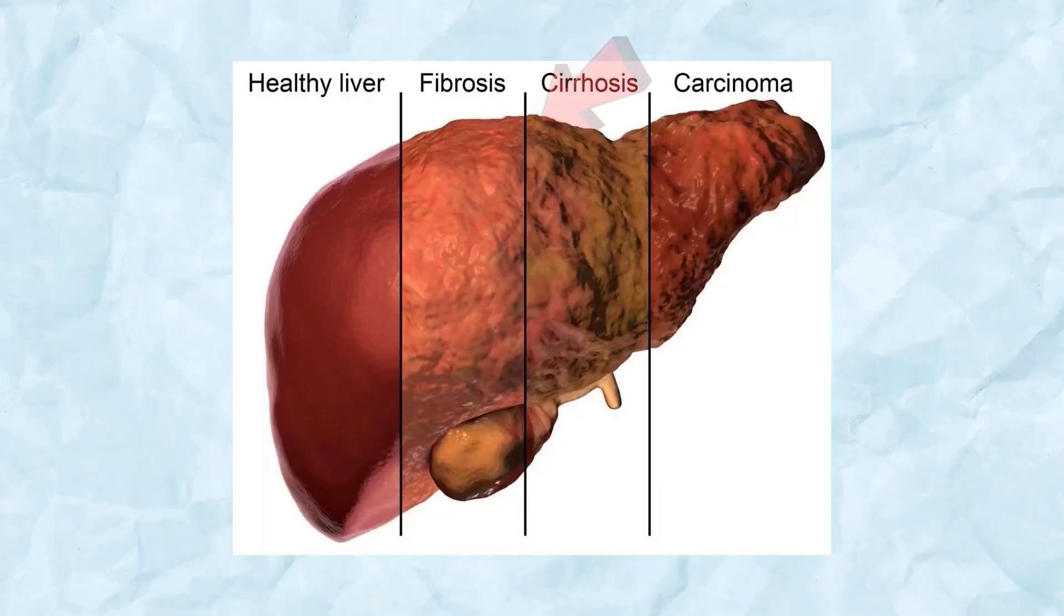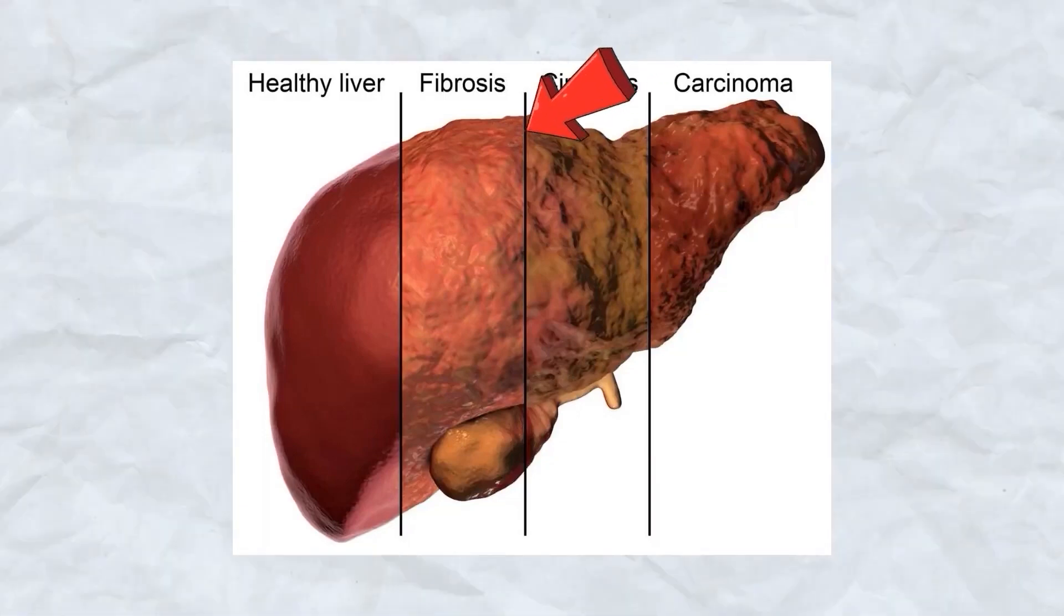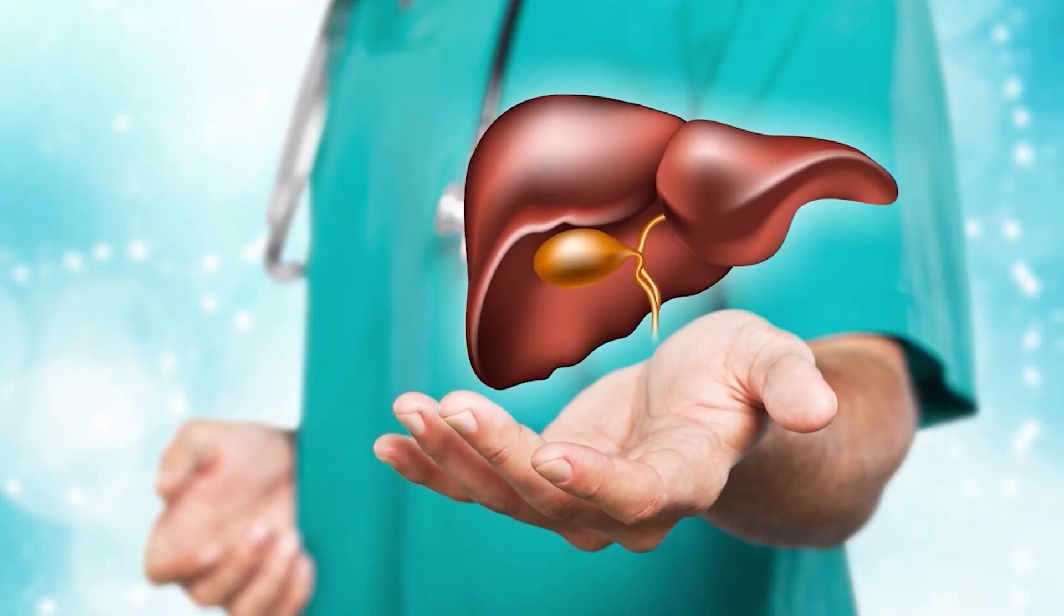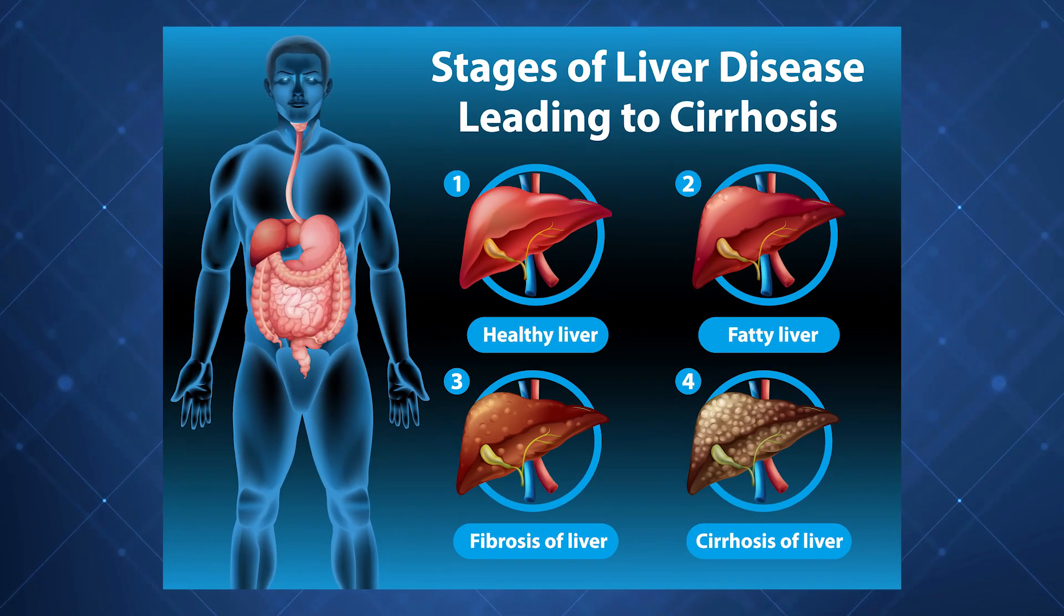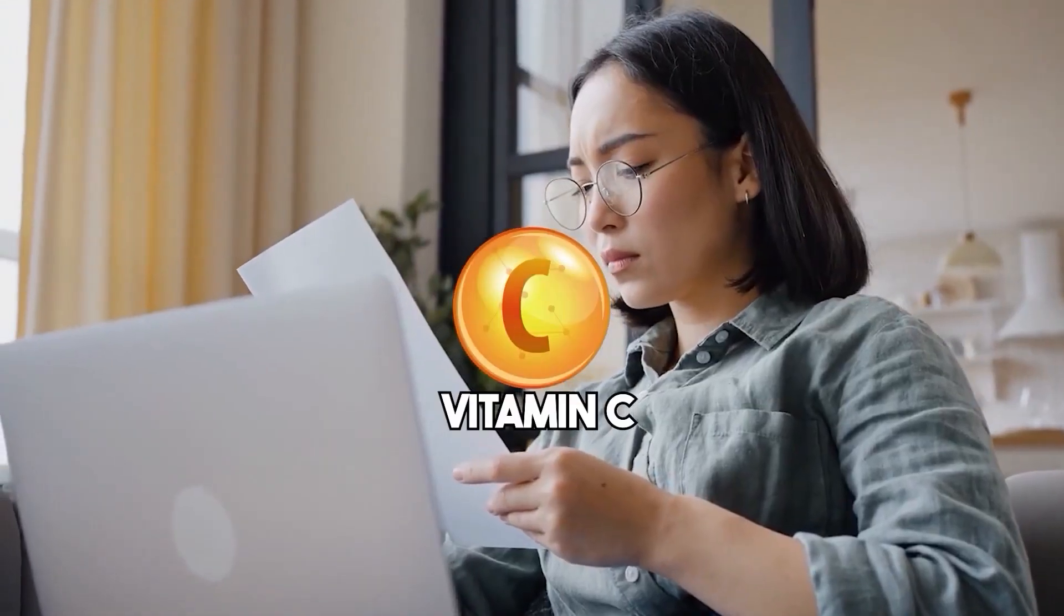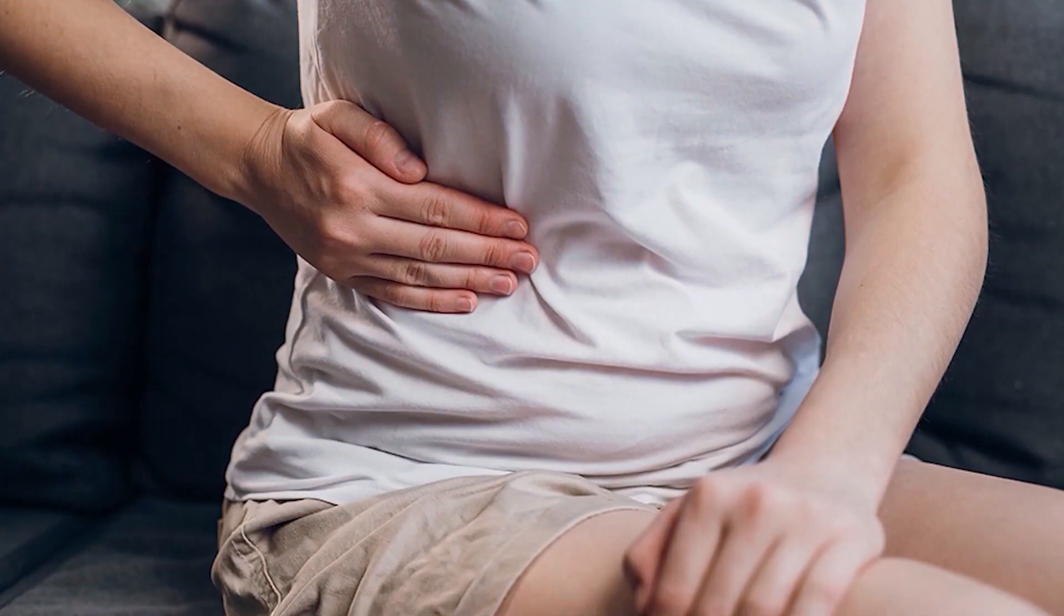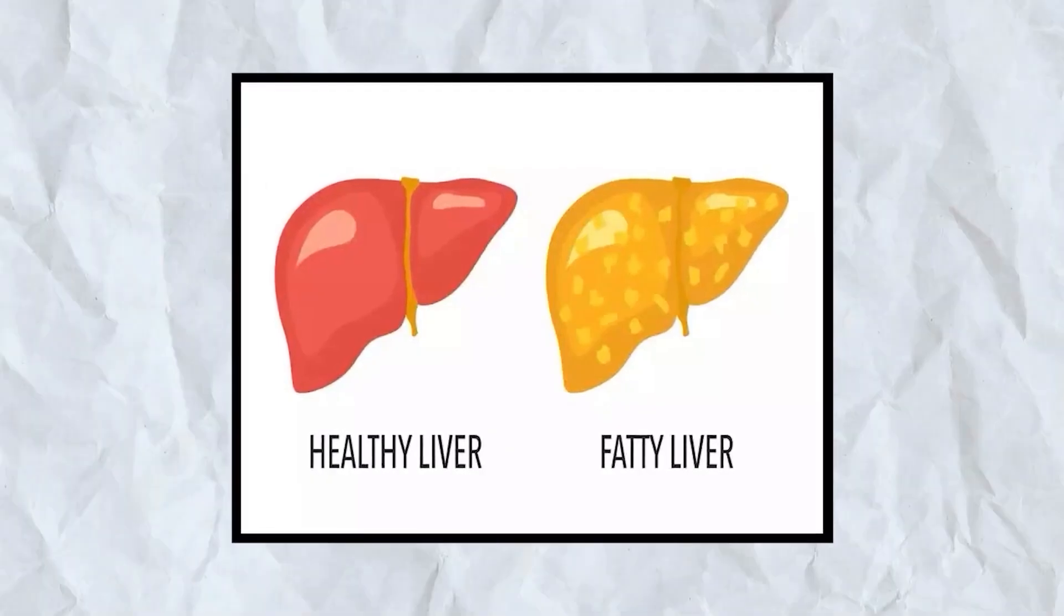One major concern in liver disease is fibrosis, the buildup of scar tissue. Having enough vitamin C can help the liver repair itself in a controlled, healthy way, reducing the risk of excessive scarring that could lead to long-term liver problems. And there's more. Research shows that vitamin C also supports detoxification and helps the liver break down fat more efficiently, which is vital for reversing fatty liver disease.